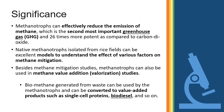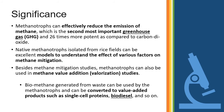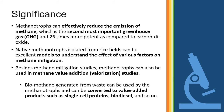The significance of methanotropes: they can effectively reduce emissions of methane, which is the second most important greenhouse gas and 26 times more potent than carbon dioxide. Native methanotropes isolated from rice fields serve as excellent models for studying methane mitigation. Beyond mitigation, methanotropes can also be used in valorization studies — biomethane generated from waste can be converted into value-added products such as single-cell protein and biodiesel.